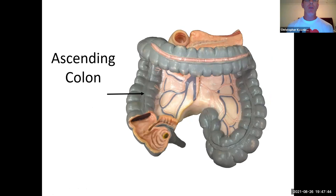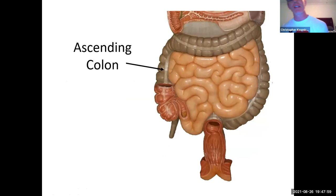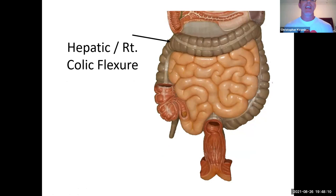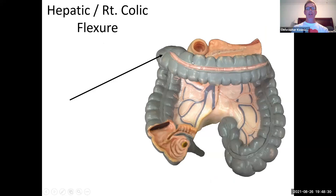From the cecum, we move superiorly toward the head. The part of the colon that ascends or goes upward is the ascending colon. It goes from the cecum to a curve on the right side of your body. The ascending colon comes to a bend called the hepatic flexure or the right colic flexure — either is acceptable. Hepatic comes from the liver, so the hepatic flexure is on the same side as the liver, on the right side.